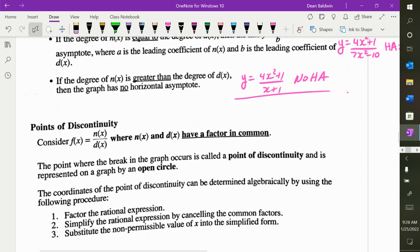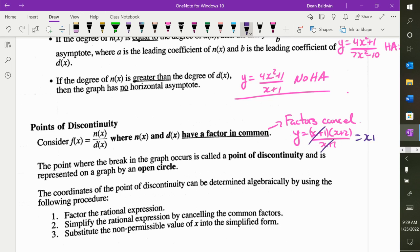And then points of discontinuity, those are the factors that cancel. So they have a factor in common. I'm going to say the factors cancel. So for example, x plus 1, x plus 2, over x plus 1. The x plus 1s obviously cancel. And you're left with x plus 2. So the POD is x is equal to negative 1. That was yesterday's class. Any questions about that? We all feel fairly comfortable with that? Perfect.